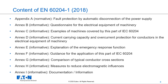Annex E explains emergency response functions. Annex F provides guidance for the application of this part of the standard. Annex G covers a comparison of typical conductor cross-sections. Annex H addresses measures to reduce electromagnetic influences, and there is also an annex on documentation information. All these appendixes are intended to help the user understand and apply the standard.